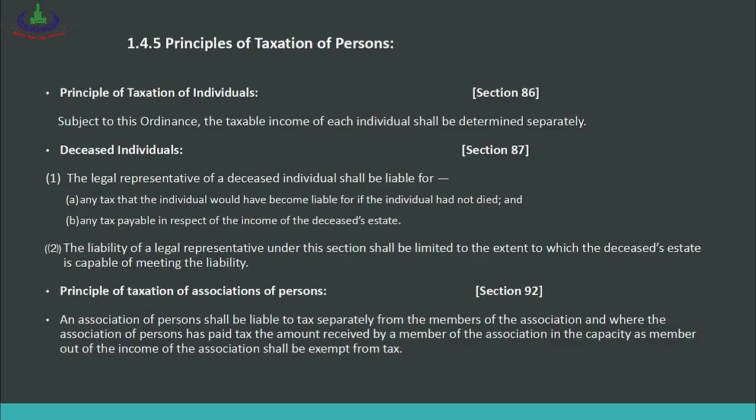Principles of taxation of association of persons, Section 92: an association of persons shall be liable to tax separately from the members of the association; and where the association has paid tax, any amount received by a member of the association in their capacity as a member out of the income of the association shall not be taxed again — the partnership firm's income is taxed at the firm level, and members' share received from that income is not taxed again.